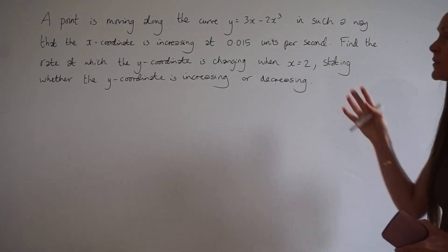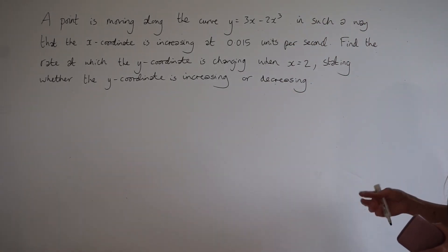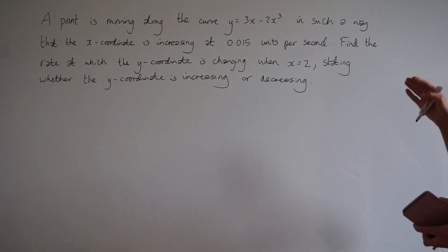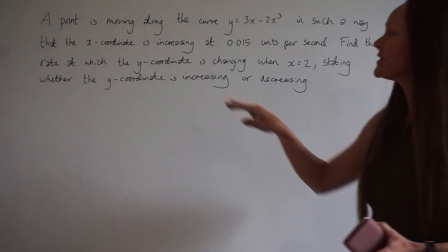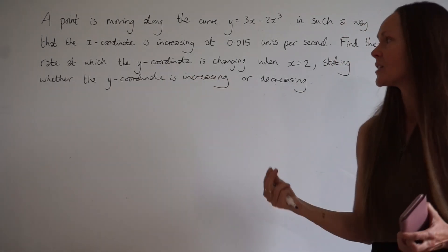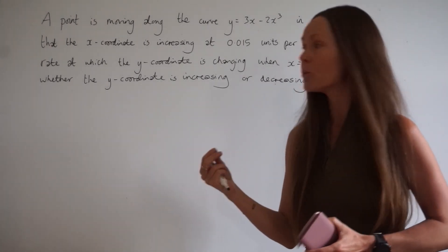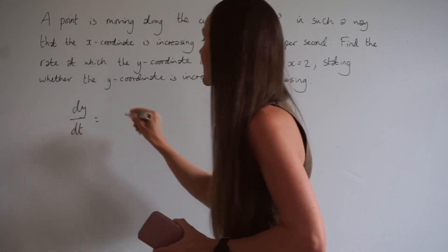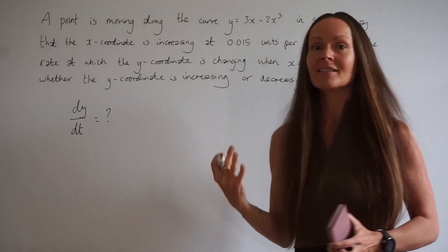When you're given a lot of information in a question like this, start by writing down what you're actually trying to work out. We have to find the rate at which the y coordinate is changing. That means we need to work out dy/dt, the rate of change of y with respect to t, in this case time.